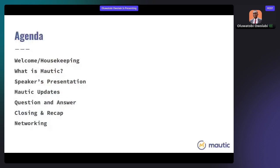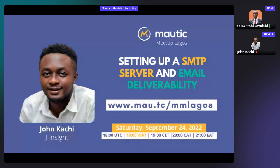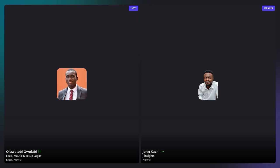For today we've done some housekeeping. Now let's look at today's topic. I want to appreciate John Kachi for joining us today — thank you for taking time out of your schedule. John is a versatile person who has worked with email systems and built email applications. He'll be taking us through how to set up your own SMTP server using Postal, connecting it with Mautic, and getting your IP on the good list.